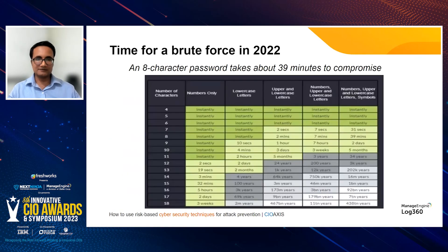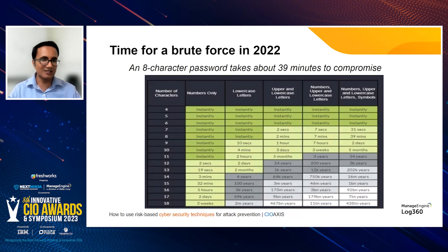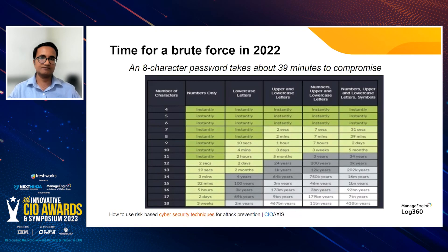Take a look at this slide — it's an example of a brute force attack from 2022. An eight-character password takes about 39 minutes to be compromised by an attacker. The recommendation to decrease your risk exposure: make sure you have at least 12-character long passwords. Even better, make use of passphrases instead of passwords. Research tells us that passphrases are harder to compromise and lead to less password fatigue for users.